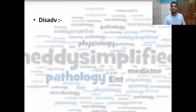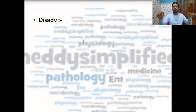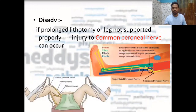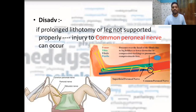There are a few disadvantages of the lithotomy position. If the patient's leg is not properly supported, or if it is a very prolonged surgery, there is a risk of injury to the common peroneal nerve. The head of the fibula can put pressure on this nerve, causing a common peroneal nerve injury as it passes around the head of the fibula.